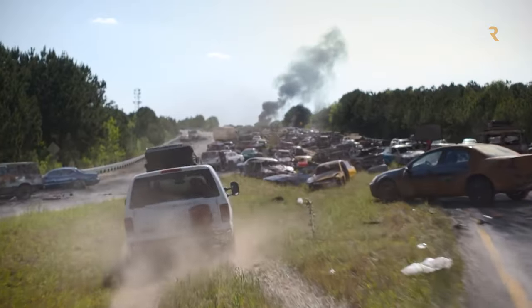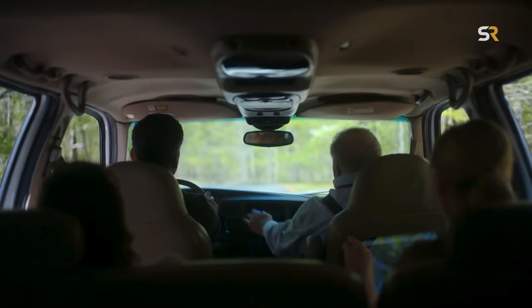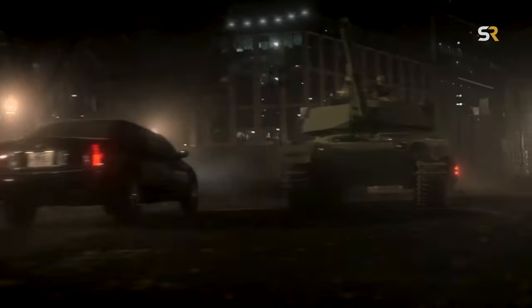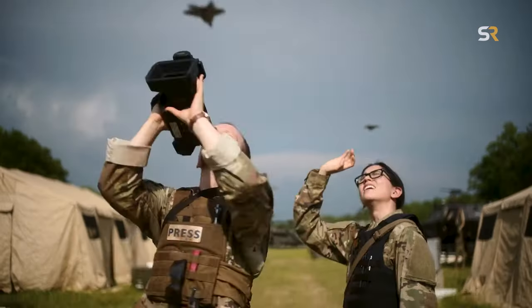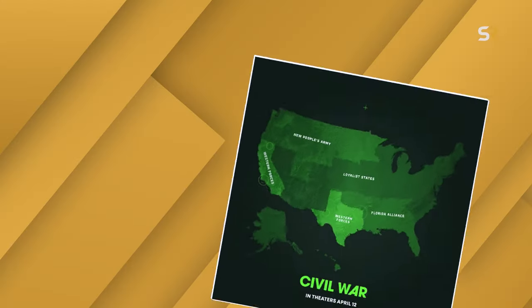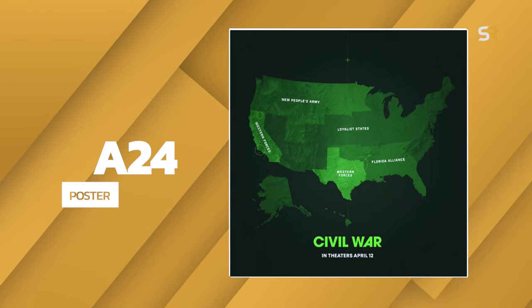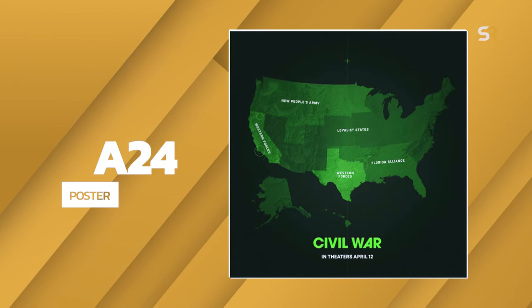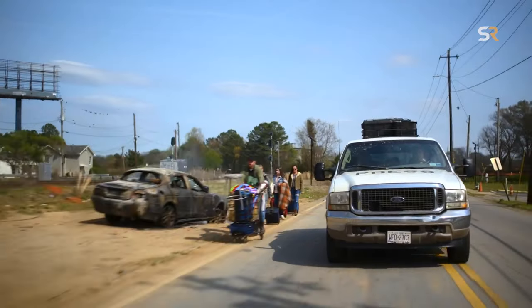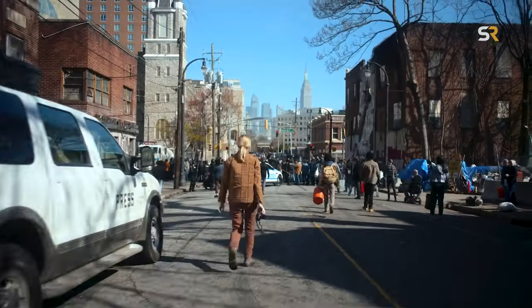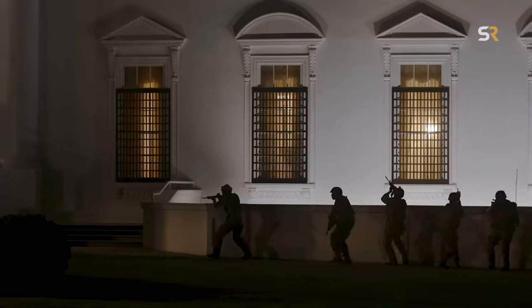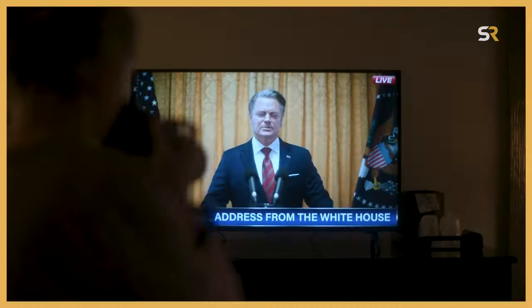The dystopian film follows a group of journalists traveling the war-torn United States during a future second civil war, documenting the struggles of survival in wartime among the fighting populations. This new poster released by A24 is showcasing a detailed map of which states are in alliance. The map shows California and Texas are part of the Western forces, which was previously teased in trailers for the movie.